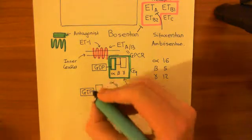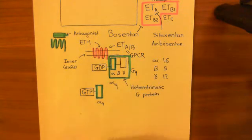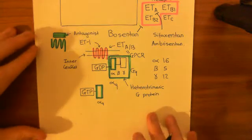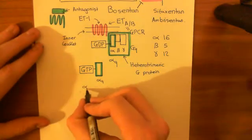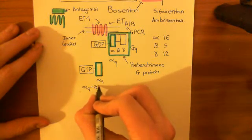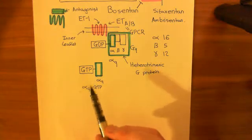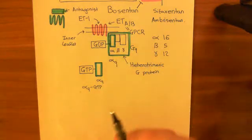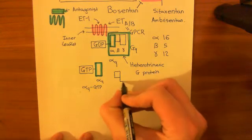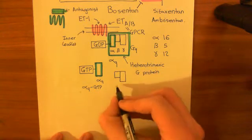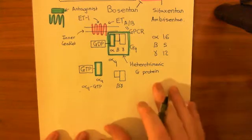We now have GTP, guanosine triphosphate, bound to the alpha-Q subunit. This complex of alpha-Q bound to GTP is now known as an alpha-Q GTP complex. When the alpha-Q subunit is bound to GTP, it no longer wants to associate with the beta and the gamma subunit, so they go off on their own, henceforth known as the beta-gamma subunit. They remain bound to one another.